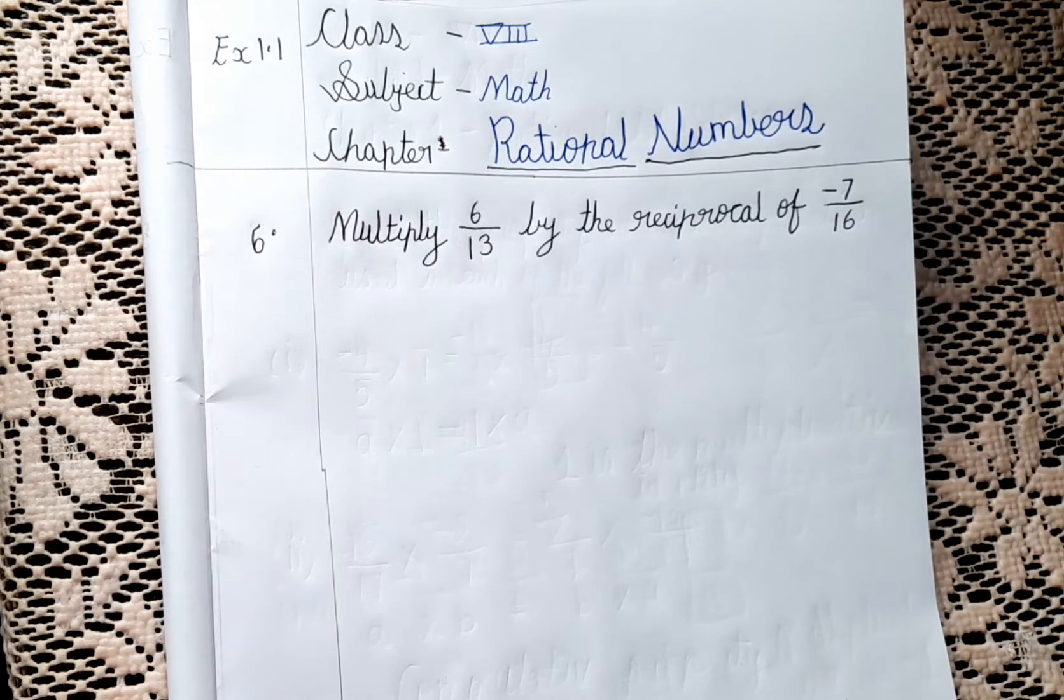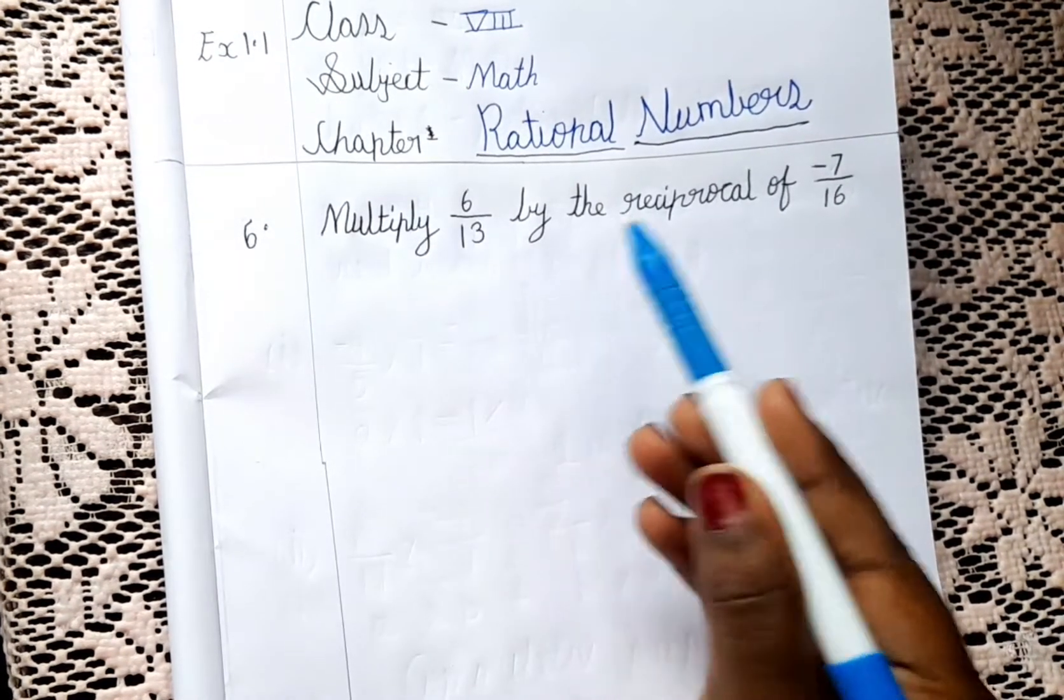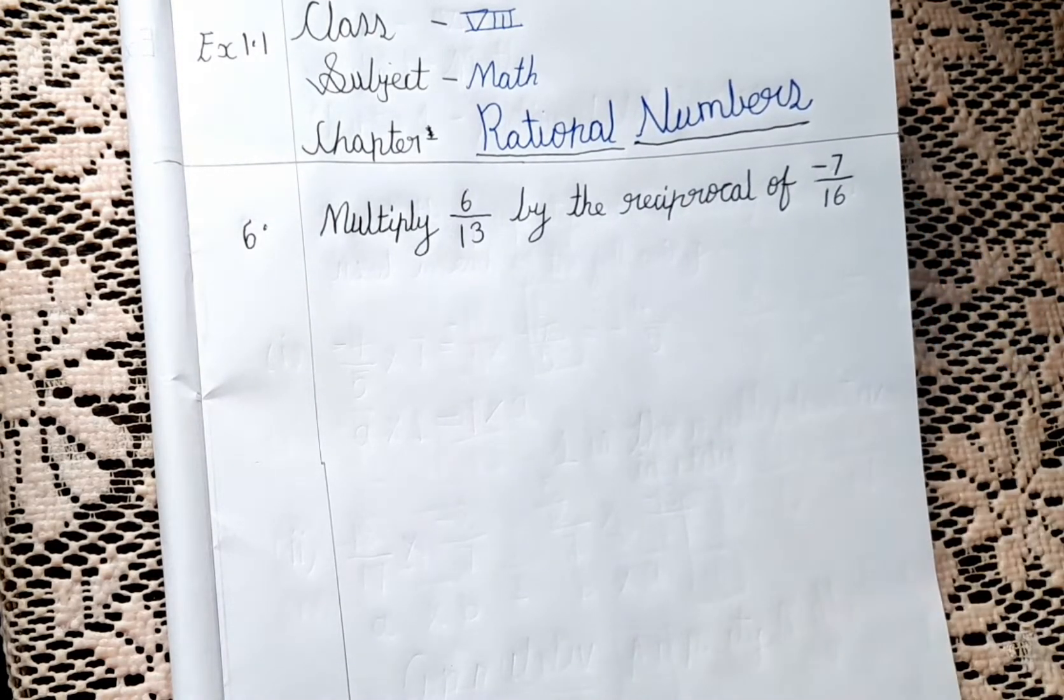So guys, in this we have to multiply 6 by 13 by the reciprocal of minus 7 by 16.